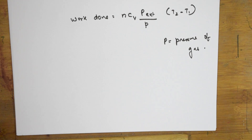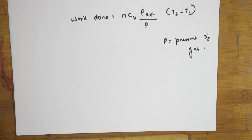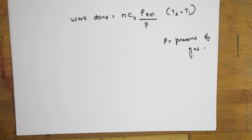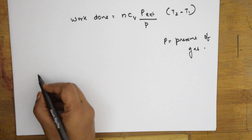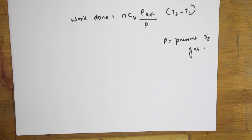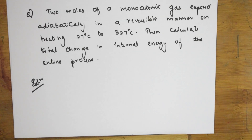I hope the concept is clear. We have now done four types of work done: PV work, isothermal reversible expansion, isothermal irreversible expansion, adiabatic reversible expansion, and adiabatic irreversible expansion. The derivations are also clear. Now let's take a numerical based on adiabatic irreversible expansion of gas.